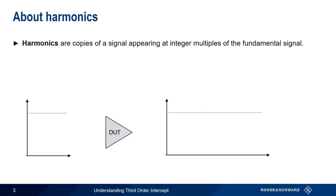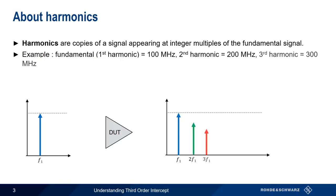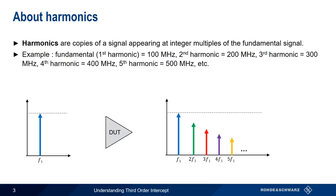Harmonics are copies of a signal that appear at integer multiples of a fundamental frequency. For example, a signal at 100 MHz passing through a nonlinear device produces harmonics at 200 MHz, 300 MHz, 400 MHz, 500 MHz, etc. Although the fundamental is not often called the first harmonic, we do commonly refer to second harmonic, third harmonic, fourth harmonic, etc.